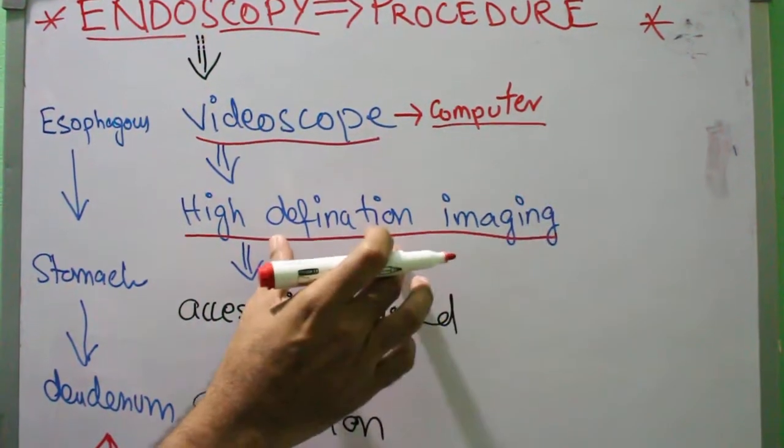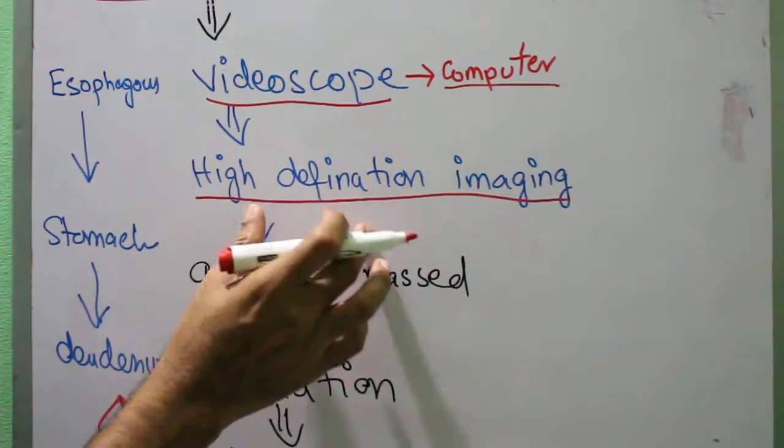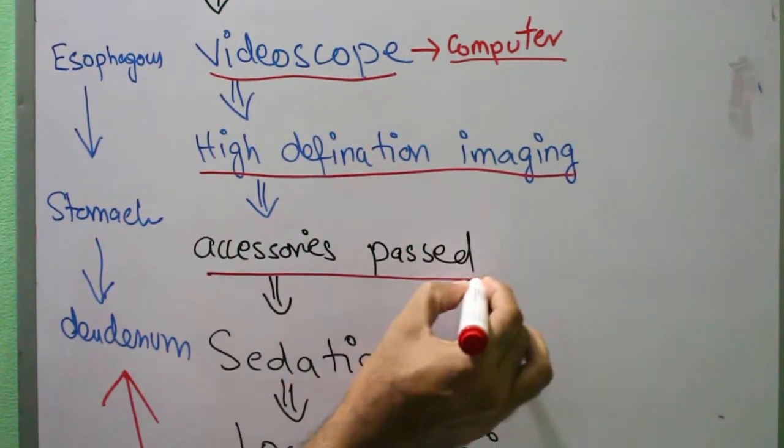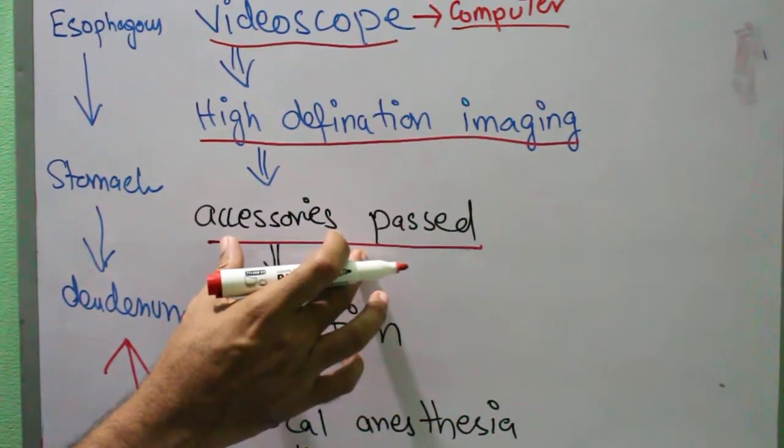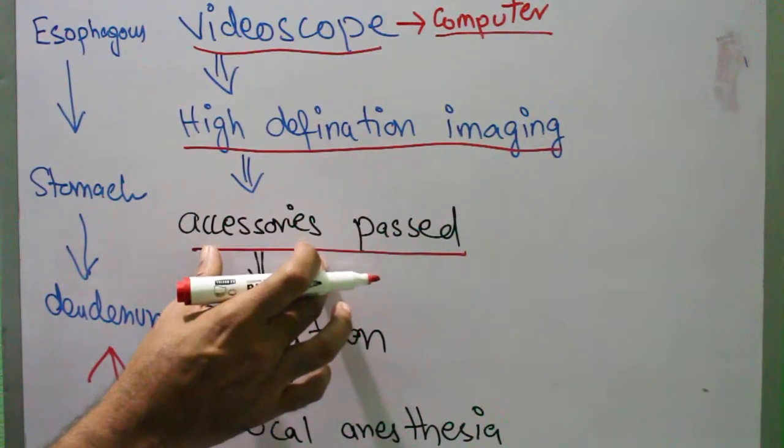Remember, HD pictures are taken and the accessories are passed. The accessories include a camera and many other things that are passed in this procedure. They pass from the esophagus to stomach and duodenum.